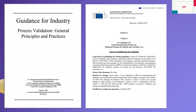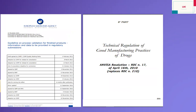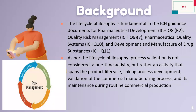For process validation, we have different guidelines: the FDA guideline on general principles and practices, the EU guideline, the WHO guideline TRS 1019 Annex 3 Appendix 7, the EMA guideline on process validation for finished products — information and data to be provided in regulatory submissions — and the PICS guideline on process validation.